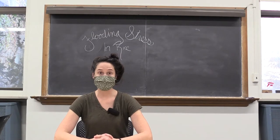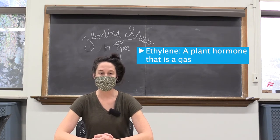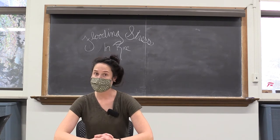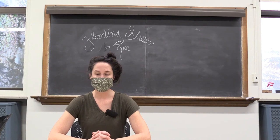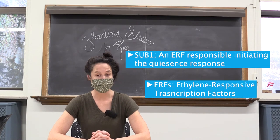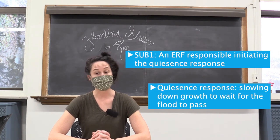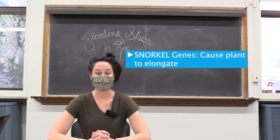Another result of submergence underwater is the accumulation of the gaseous hormone ethylene, which builds up because gases diffuse slowly through water compared to air. Plants can respond to ethylene in a variety of ways depending on genetic background, cellular energy, O2 levels, and other factors. In some flooding-tolerant varieties of rice, increased ethylene leads to expression of ERF sub 1, a gene that suppresses growth to initiate the quiescence response. In other species, ethylene leads to the expression of snorkel genes, which cause the plant to elongate.